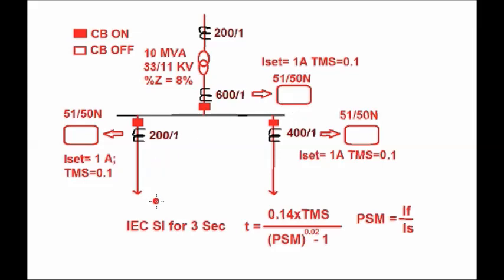The relay coordination is such that if any fault occurs in a feeder, the feeder relay should pick up first and trip its circuit breaker. If that relay is unable to clear the fault — due to some reason such as a breaker failure — then only the LV overcurrent and earth fault relay will clear the fault after a certain time delay by tripping the 11 kV incomer circuit breaker. This is the coordination philosophy for the relay settings.